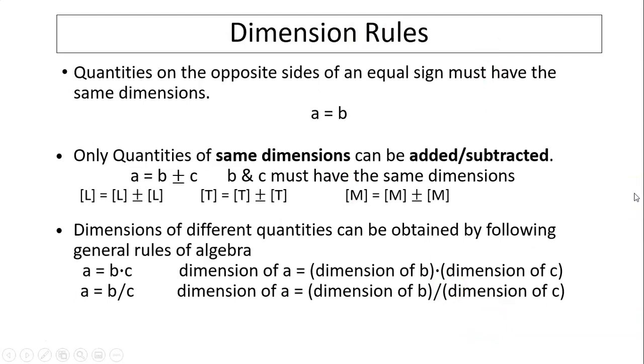To determine dimension, we have to use math rules. Quantities on opposite sides of an equal sign must have the same dimensions. If A equals B, then A must have the same dimension as B. Only quantities of the same dimensions can be added or subtracted. If B has dimension L and C has dimension L, we add them together to get A, which must also have dimension L.